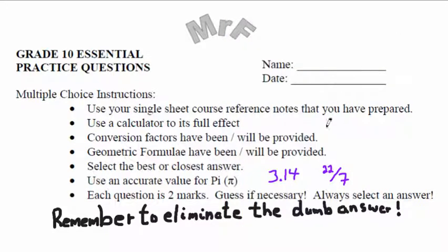Use the real, more accurate value of pi. Each question is 2 marks. Show your work for the open response part in part 2. Remember to eliminate the dumb answers. Often in multiple choice there are one, sometimes two, sometimes three dumb answers. Don't pick the dumb — use some common sense.